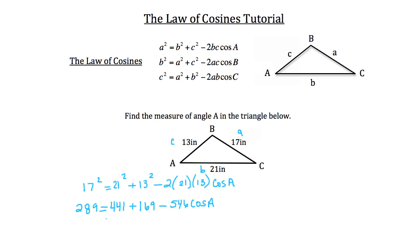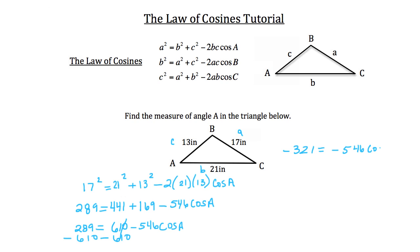So I'll add 441 and 169 together. We have 289 is equal to 610 minus 546 times the cosine of angle A. Now I want to subtract 610 from both sides of the equation. When I do that, we have negative 321 on the left side. On the right side, the 610 is cancelled, and we have negative 546 times the cosine of angle A. So I want to divide both sides by negative 546 to get angle A alone. We have 0.59 on the left side, and on the right we're left with the cosine of angle A.